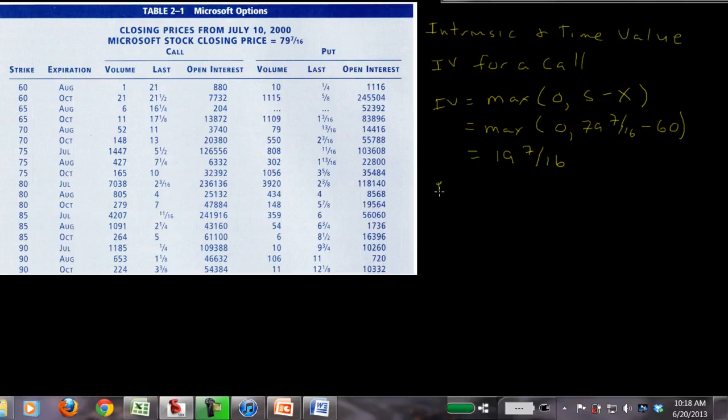Time value in this case is equal to the premium minus the intrinsic value. So in this case it's going to be 21 minus 19 and 7 sixteenths. So that's going to be 1 and 9 sixteenths.